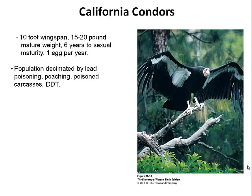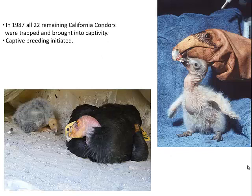In fact, poison carcasses were placed out — people would take a dead animal and put something like strychnine or cyanide in it. The purpose was to kill animals like coyotes, wolves, or cougars, though as we've since learned, this was not a good idea in most cases. The populations of those animals were decimated as a result of this practice. Poaching — illegal hunting — and DDT, an insecticide, all led to decimation of the California condor population.